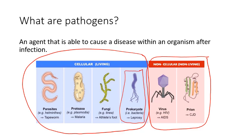Pathogens that fall into the non-cellular or non-living category are pathogens that are not made of cells. For example, a virus and also something known as a prion — it doesn't really matter how you pronounce it. Both of these are examples of pathogens that are not made of cells, so they don't have things like ribosomes, mitochondria, chloroplasts, plasma membranes, any of that. They're made of different substances.